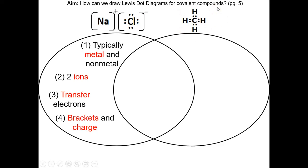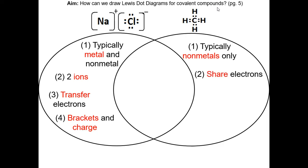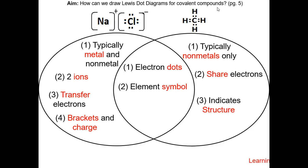CH4 is a covalent compound. Covalent compounds are typically non-metals only. The Lewis dot diagram is showing the sharing of electrons and it indicates the structure of the covalent molecule. In terms of similarities, they both have electron dots, element symbols, and they're both following the octet rule.